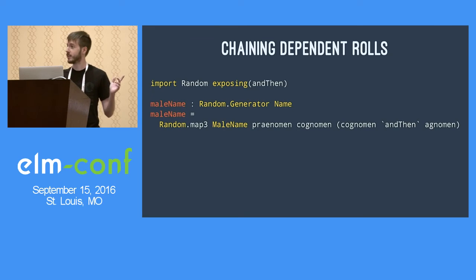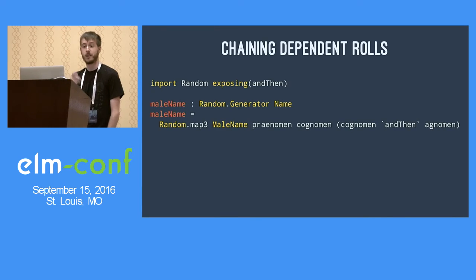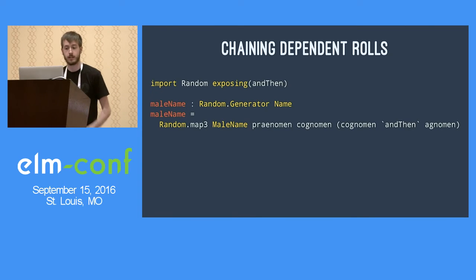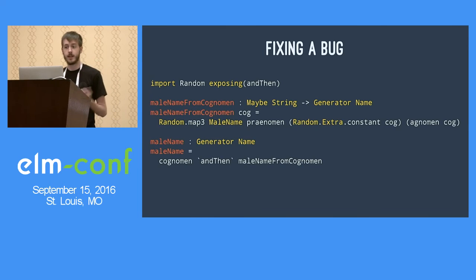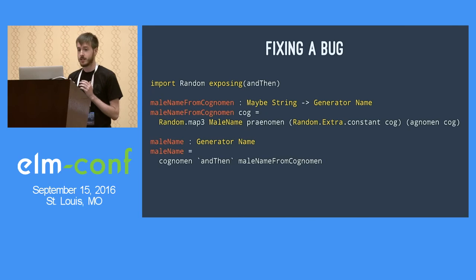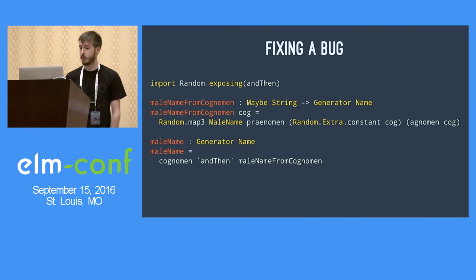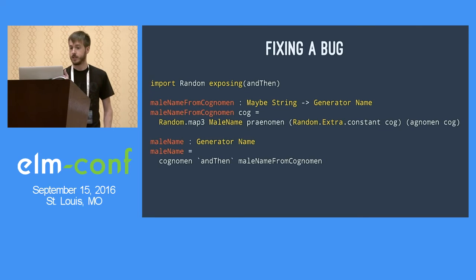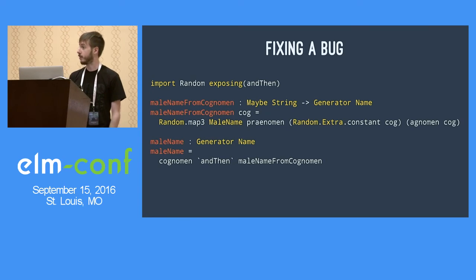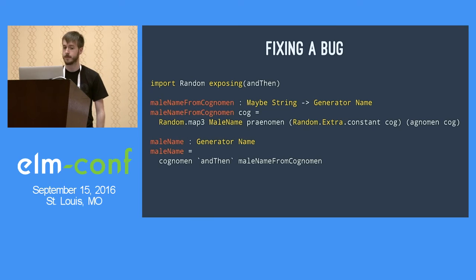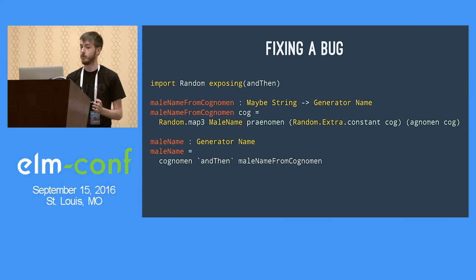There's actually a bug in this code — we're generating the cognomen twice, so we might get Nothing the first time and a value the next, making the calculation incorrect. Here's the correct version: we invert the logic so the whole male name generation happens by passing in the cognomen, generating it with map3 at the higher level without using andThen at that level. Because cognomen is passed in as a value, we wrap it in a constant generator so that Random.map3 receives three generators. And then for the high-level male name, we roll a cognomen and then pass that result into the maleNameFromCognomen function.